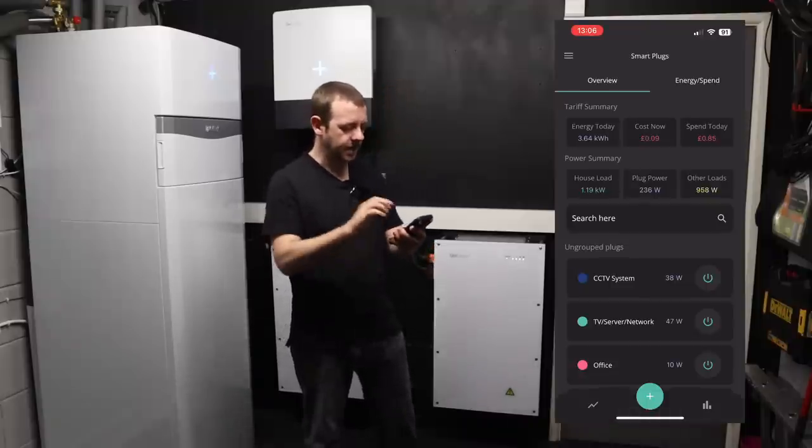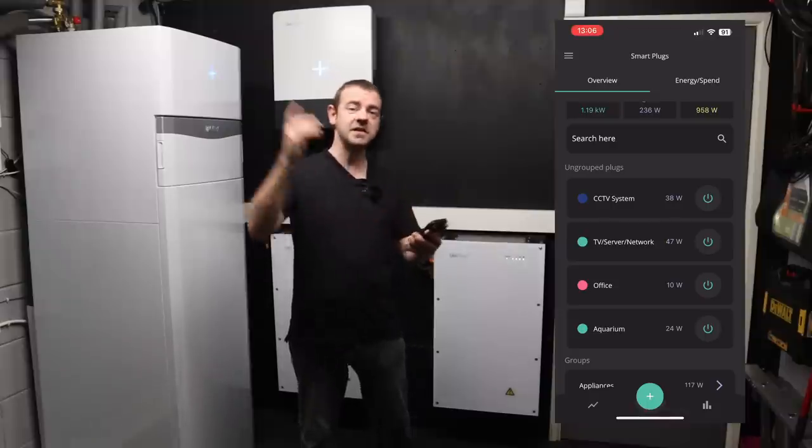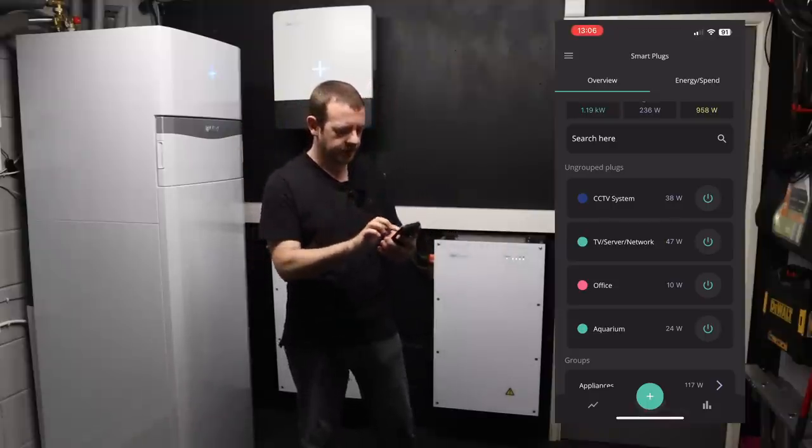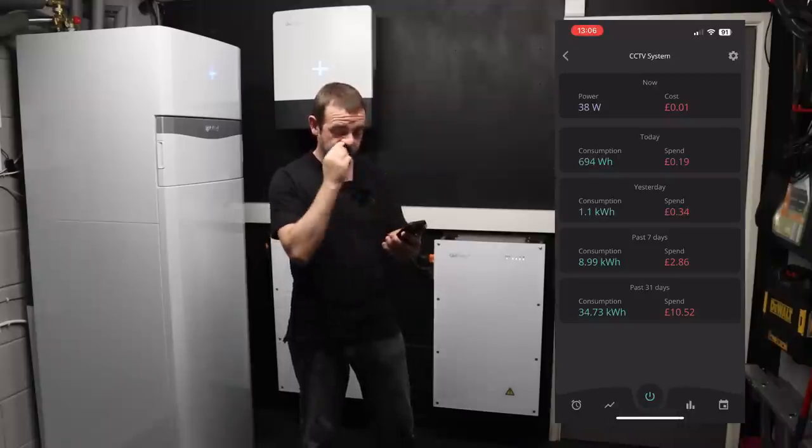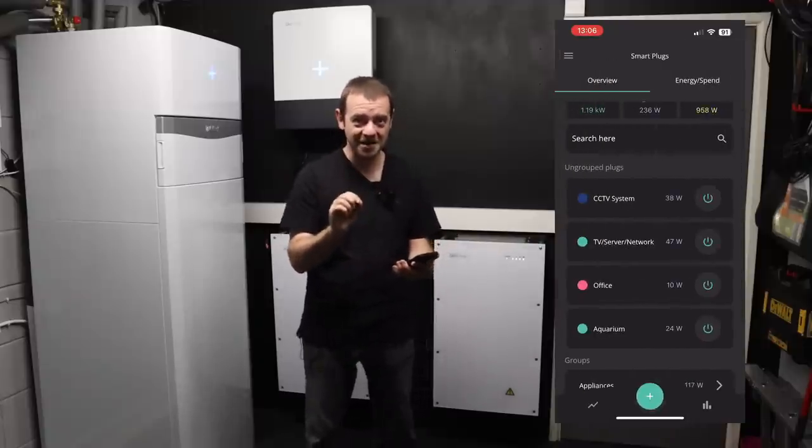I've got seven or eight of them I think. So you can see my CCTV system upstairs is currently using 38 watts, which if I click on it will then tell me how much it's used over the last day, seven days, 31 days. So you can micromanage, which will literally annoy your family, how much you're using.